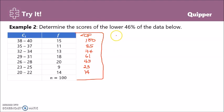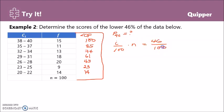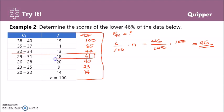Now we look for the P sub 46 class using the formula i over 100 times N. Substituting, our i is 46, so we have 46 divided by 100 times N, where N is 100. This simplifies to 46. We look for the closest less than cumulative frequency greater than 46, which is 61. Therefore, P sub 46 is somewhere between 29 to 31, and this is our P sub 46 class.